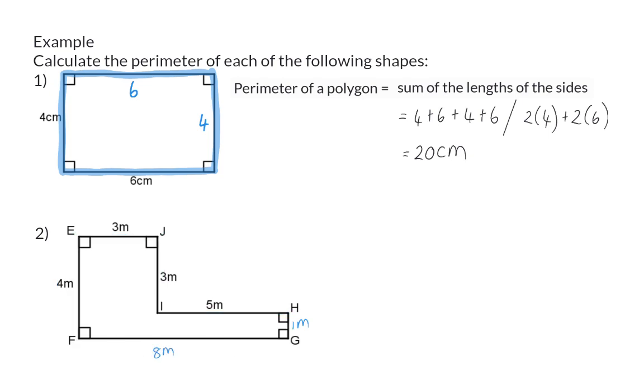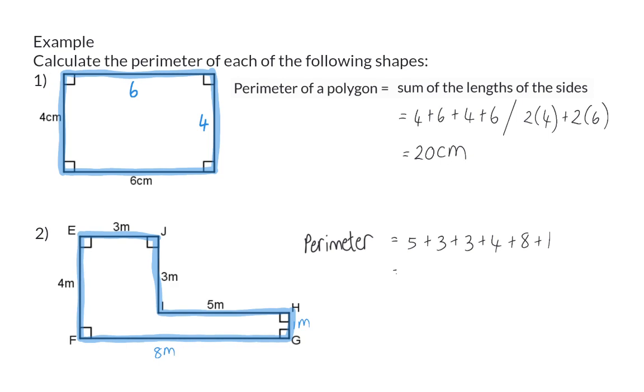This means that the perimeter of this shape is five meters plus three plus another three plus four plus eight plus one. This gives us a perimeter of 24 meters.